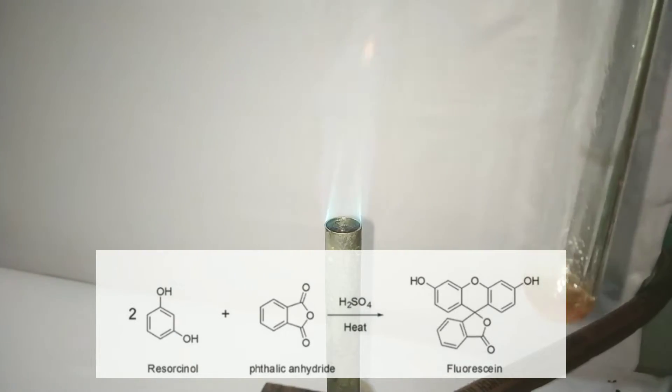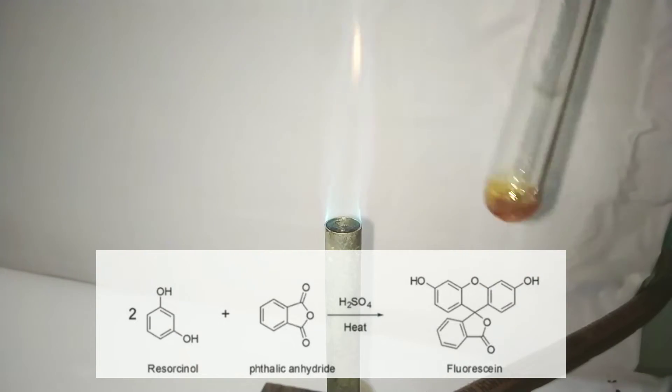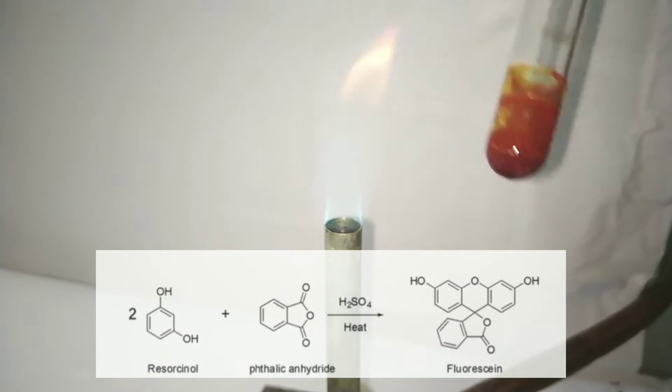Now we gently heat the test tube over the Bunsen burner flame. The compound melts and attains a deep red color. What's happening is phthalic acid gets dehydrated by the sulfuric acid to form phthalic anhydride, which then reacts with resorcinol to form fluorescein.